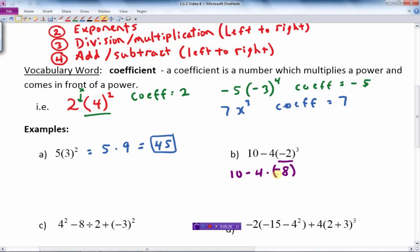Now what do I do? The negative 8 is being multiplied by the 4, and then there's the 10 subtracting, so I have to do the multiplication next. So I do this part next.